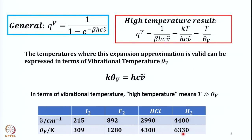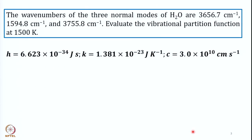I hope the meaning and significance of vibrational temperature are clear. Let us apply what we have discussed to solving some numerical problems. The wave numbers of the 3 normal modes of H₂O are given: 3656.7 cm⁻¹, 1594.8 cm⁻¹, and 3755.8 cm⁻¹. Evaluate the vibrational partition function at 1500 K. There are three normal modes of vibration.